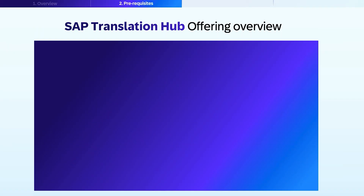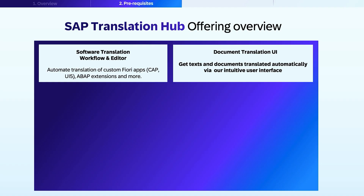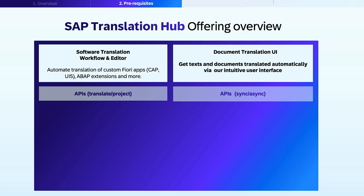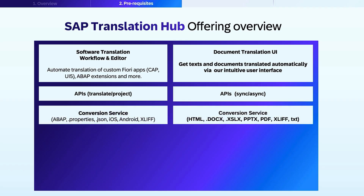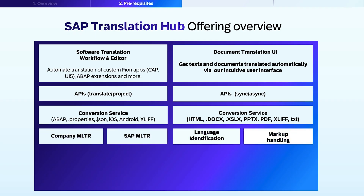Here's an overview of the SAP Translation Hub offering. On the left, you see the Software Translation Workflow and Editor — it automates translation for custom Fiori apps including SAP UI5 and ABAP extensions, and you manage projects from start to finish in one place. On the right is the Document Translation User Interface, where you can translate text and full documents automatically through an intuitive screen. Its APIs support both synchronous and asynchronous jobs. Conversion services handle many formats: for software, ABAP property files, JSON, iOS, and Android; for documents, HTML, Excel, PDF, and plain text.